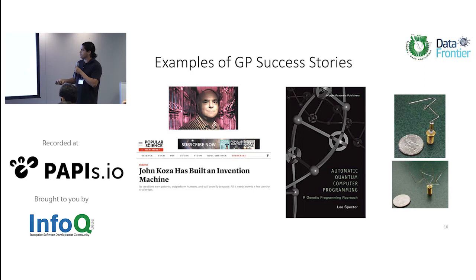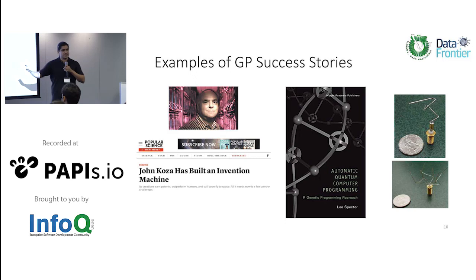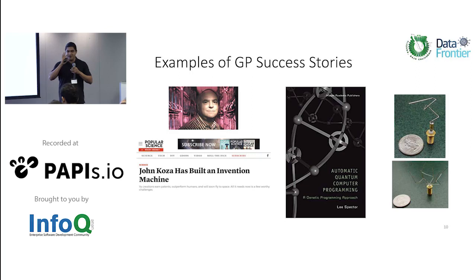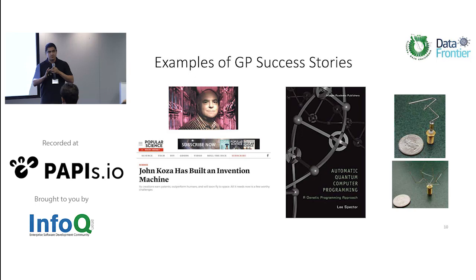Another cool example is work by Lee Spector from Hampshire College. He did automatic quantum programming with genetic programming — this is a real physics problem. One of the main challenges with quantum computers is actually programming them, and traditional programmers have a very hard time coming up with new algorithms. He worked with a group of physicists and was able to evolve several new algorithms for quantum computers purely through genetic programming search. This is one of the coolest examples of how to use GP correctly.